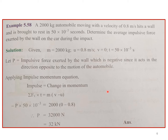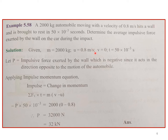Problem 1: A 2000 kg automobile moving at 0.8 m/s hits a wall and is brought to rest in 15×10⁻³ seconds. Find the average impulsive force exerted by the wall. Given: m = 2000 kg, initial velocity u = 0.8 m/s, final velocity v = 0, time T = 15×10⁻³ s. Using the impulse-momentum equation, impulse = change in momentum. The impulsive force P acts opposite to the direction of motion, so it is taken as negative.